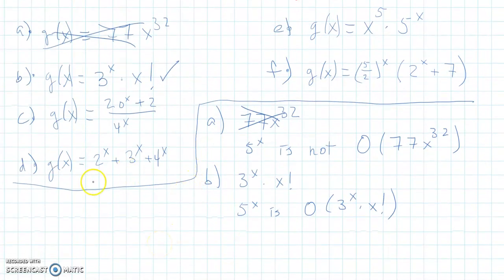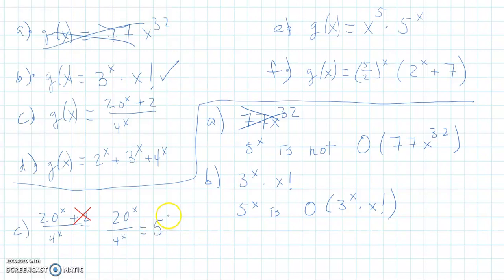Let's look at part c. Well, notice that 20 to the x plus 2 over 4 to the x. I mentioned before that when you're doing big O, you can ignore the lower terms that are added on because the big O of two things that are added together is always the biggest one. So we can ignore that plus 2 constant. And once we do that, notice that 20 to the x over 4 to the x, this is just a college algebra thing. This simplifies to 5 to the x.